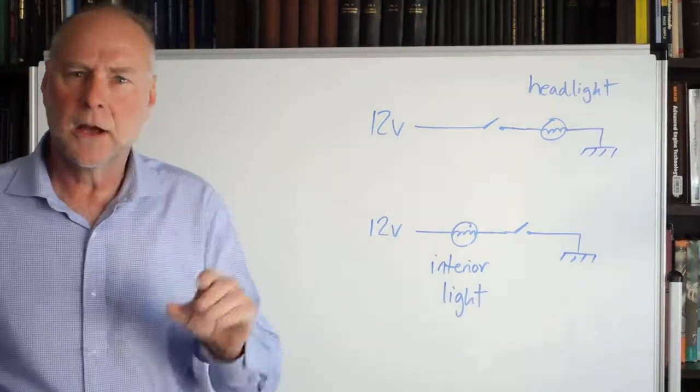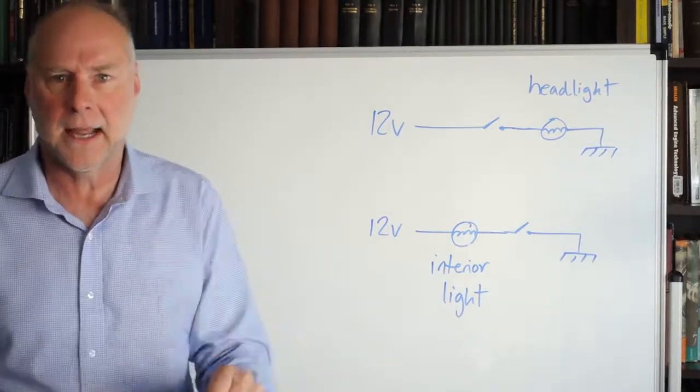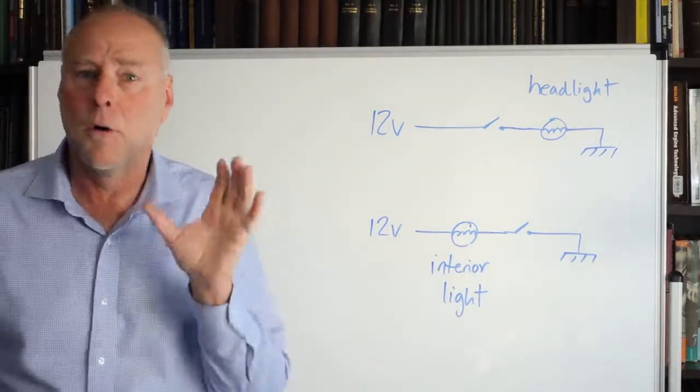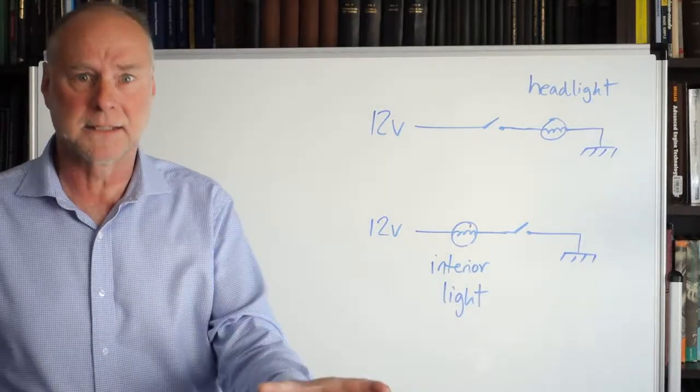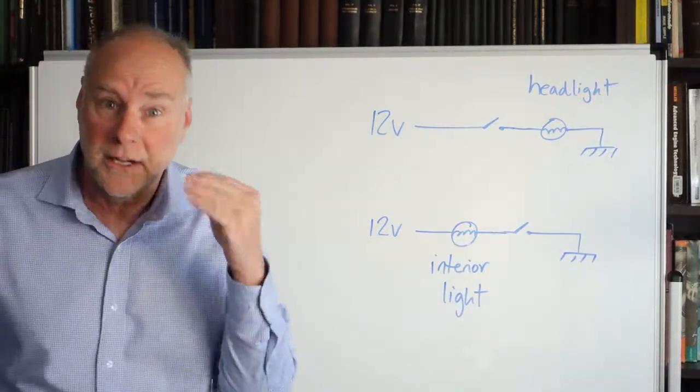What I want to do now in this video is talk about a headlights-on alarm that you can add to your car. It's dead simple, all you'll need is a polarised buzzer, in other words, an electronic buzzer that works when you connect power to it in only one direction.